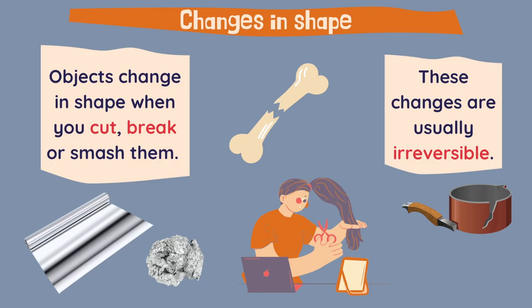Let's have a look first at changes in shape. Objects can change in shape when you cut, break or smash them. For example, this bone is broken. It is still a bone, but it is broken. You can fix the bone, your body will fix the bone, but it will not be the same. These changes are usually irreversible.